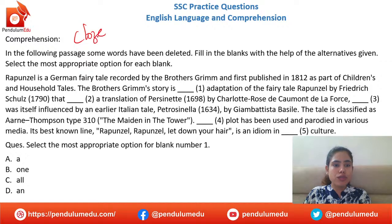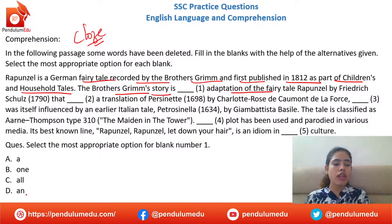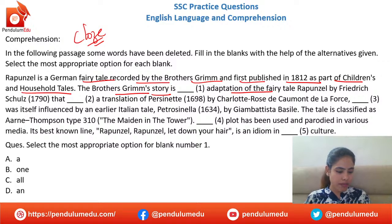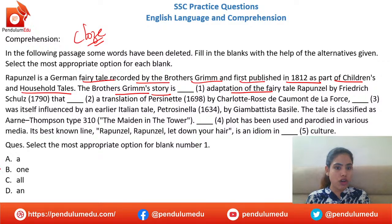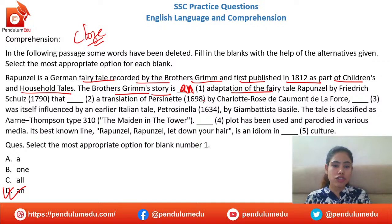Another cloze passage — this is the third one today. 'Rapunzel is a German fairy tale recorded by the Brothers Grimm and first published in 1812 as part of Children's and Household Tales. The Brothers Grimm's story is ___ adaptation of.' Options: is a, one, all, an. It will be 'an adaptation' — option D is right. 'One adaptation' makes no sense here; we need the article 'an.'